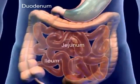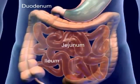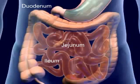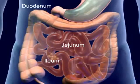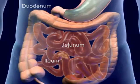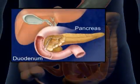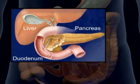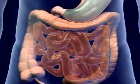The major portion of absorption and digestion occurs in the small intestine. The mucosa secrete enzymes that supplement the digestive enzymes of the pancreas and liver. This completes the chemical process of digestion.